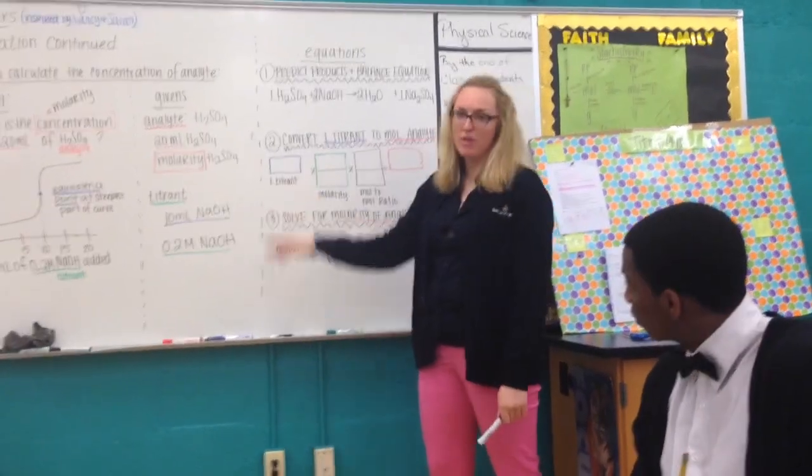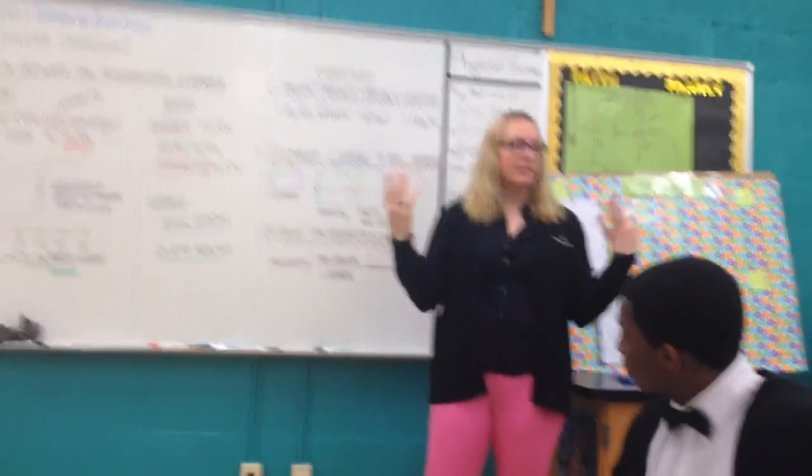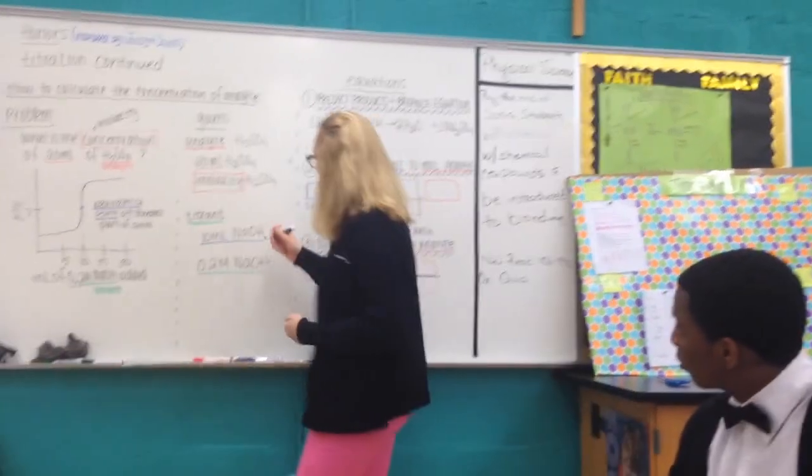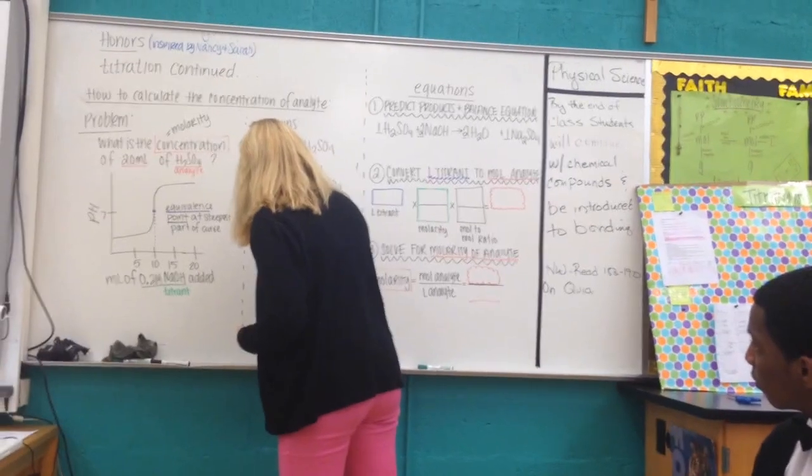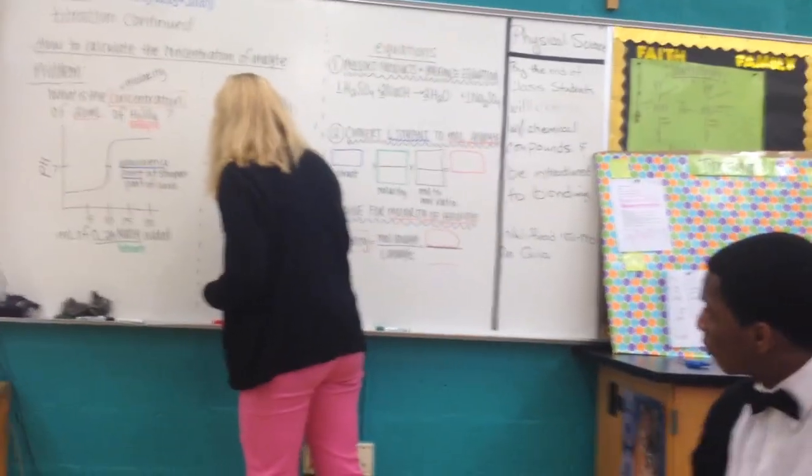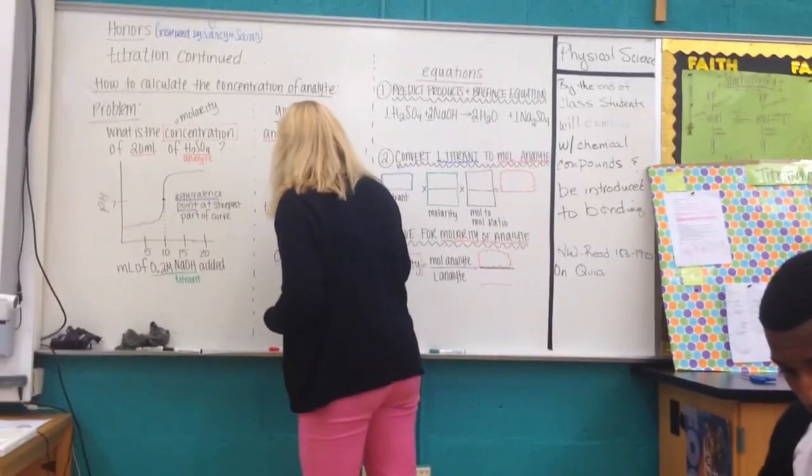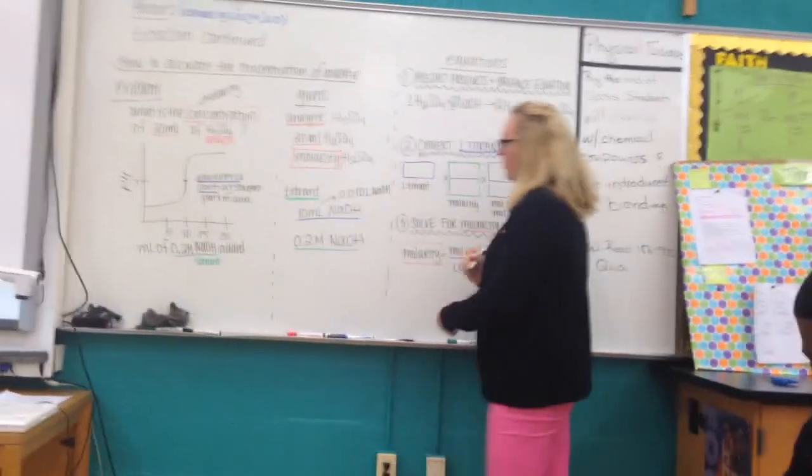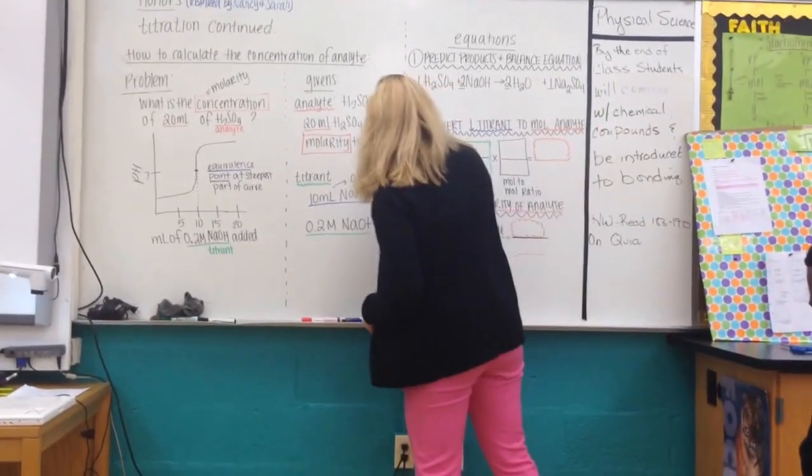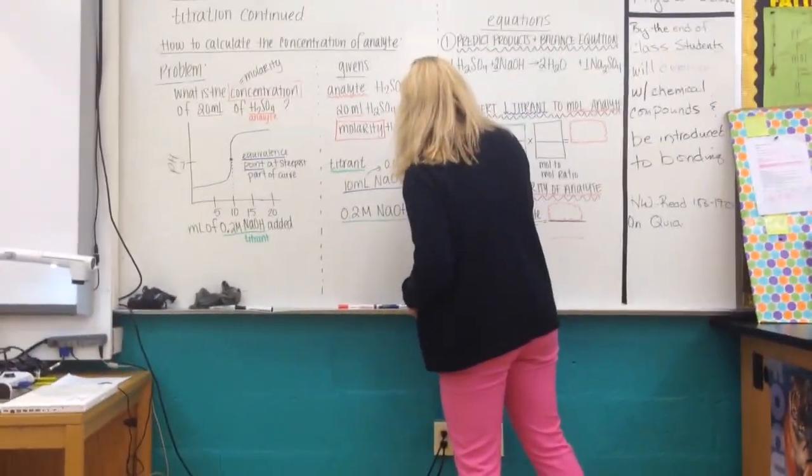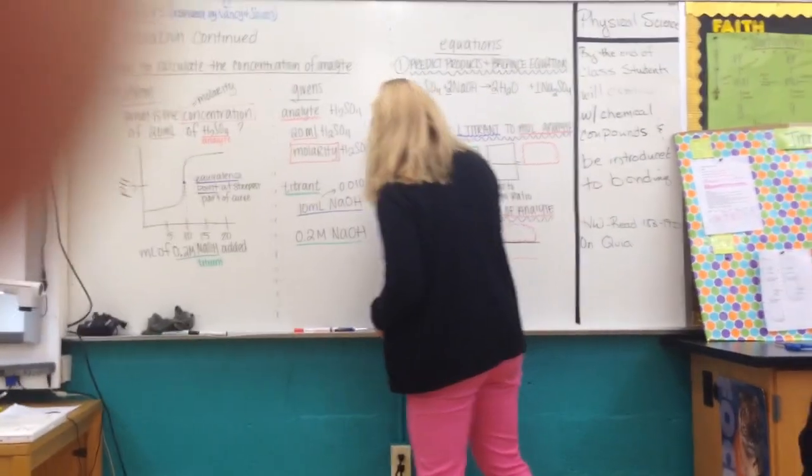I can't use milliliters, so I have to convert that. Divide 10 by 1,000, which gives me 0.010 liters of NaOH. So I'm going to put that in here as my value: 0.01 liters of NaOH.